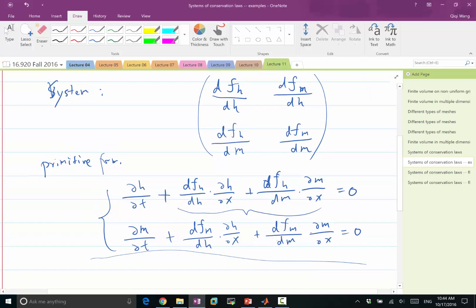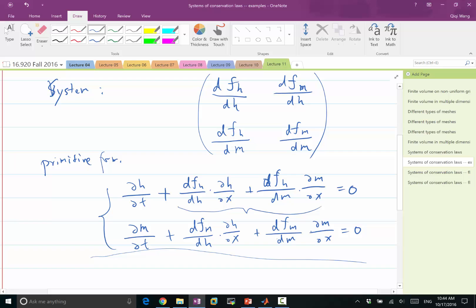So for example, if both FH and FM are linear functions of H and M, what is this equation going to look like? Linear direction would be a scalar equation, right?